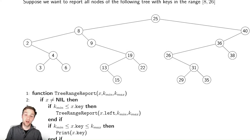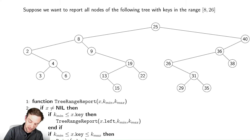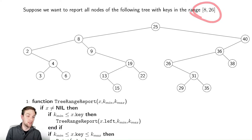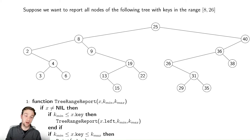One of the first methods we talked about with regard to binary search trees was how to report all values within the tree — our in-order walk. We're going to examine a slightly different problem now: how do we report all the values within a certain range in the tree? Here our range of values we wish to report is 8 to 26. So how can we do that?